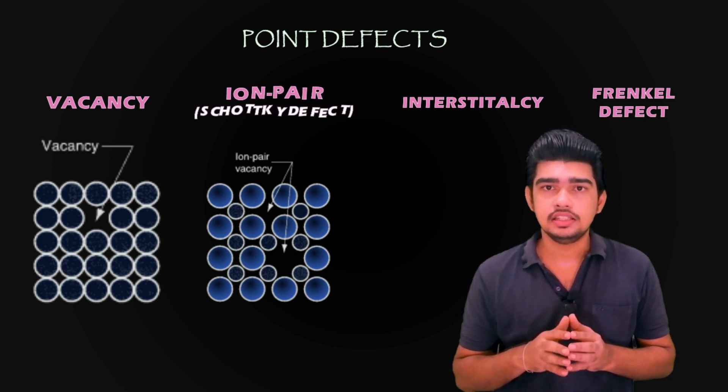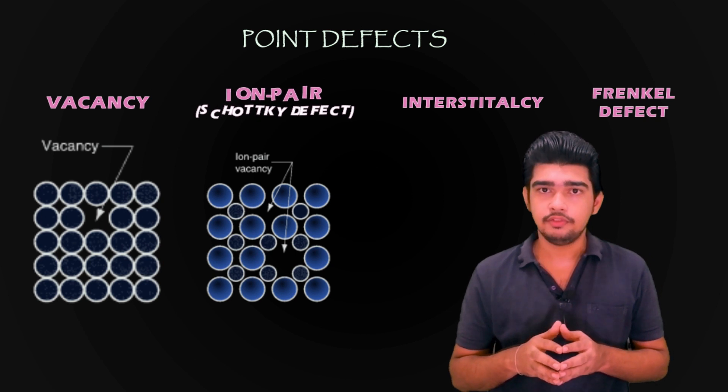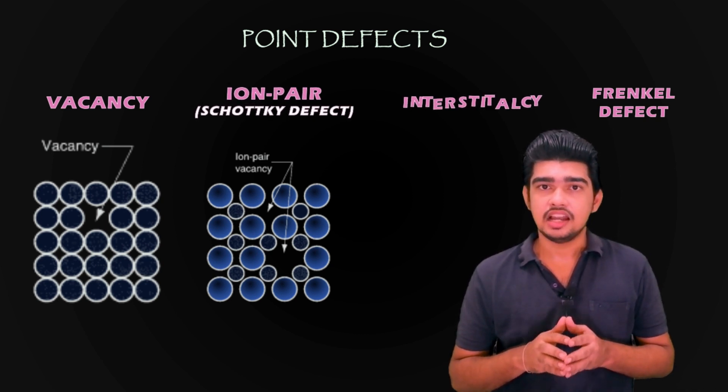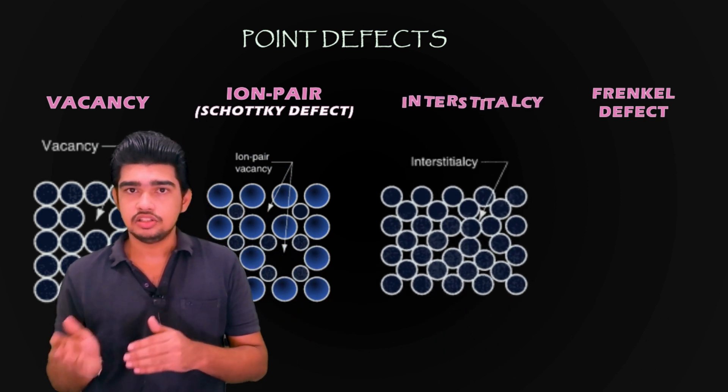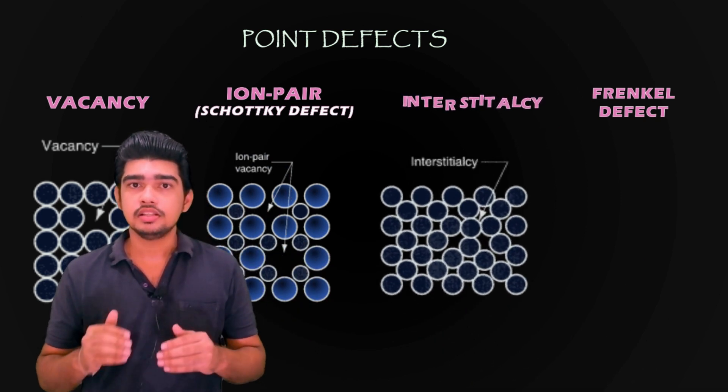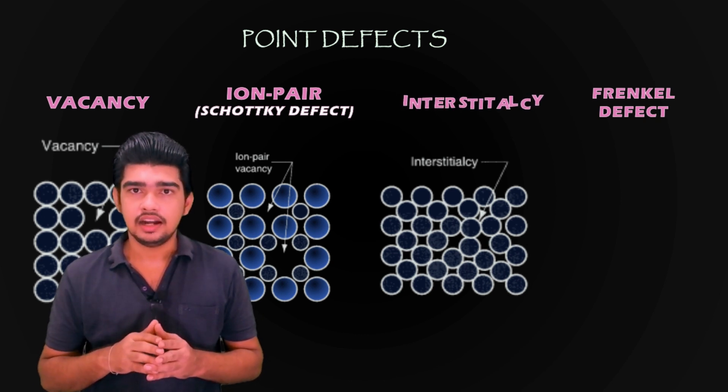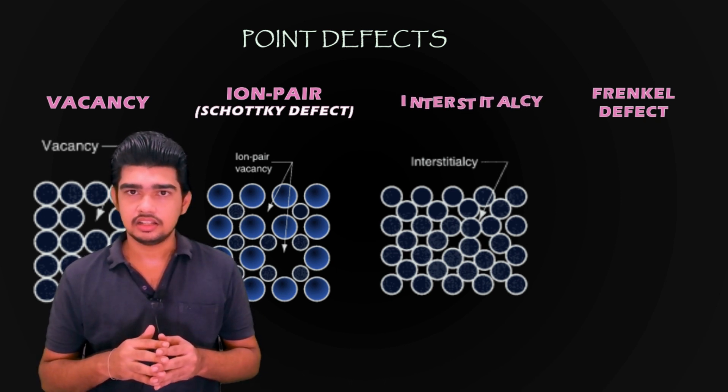The third one is interstitialcy, a lattice distortion produced by the presence of an extra atom in the structure. Here you can see an extra atom is present in the structure.